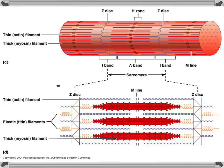Here is a picture of a myofibril specifically showing the structures within the sarcomere, with a close-up view below. The sarcomere extends from one Z-line to the next Z-line. The Z-line, also called the Z-disc, gets its name from the fact that it forms a zigzag line.